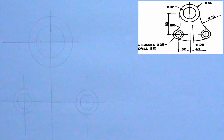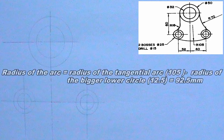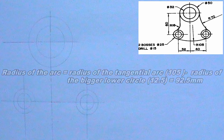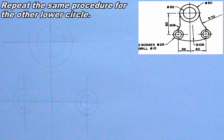This is time to produce the lower tangential arc. To produce the lower tangential arc, I will place my compass on the center of any of the lower circles, with a radius equal to the radius of the tangential arc minus radius of the bigger lower circles. That is 105 minus 12.5, which is equal to 92.5mm. I will repeat the same procedure for the other lower circle. The arc produced should intersect the previous arc.